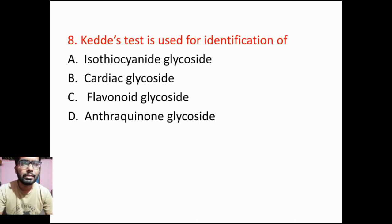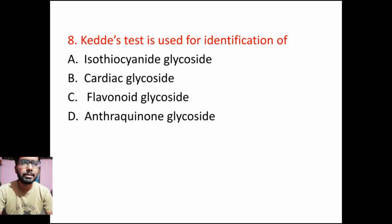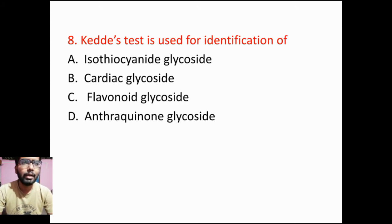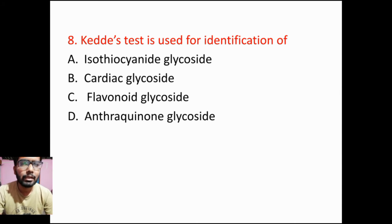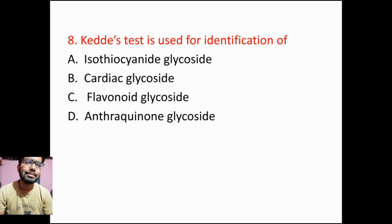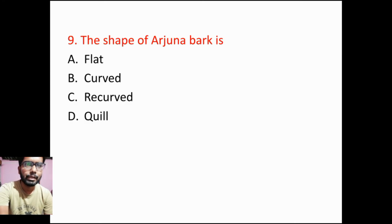Next question: which test is used for identification of — Option A: isothiocyanate glycoside, Option B: cyanogenic glycoside, Option C: flavonoid glycoside, Option D: anthraquinone glycoside. The Kilishi test is always used to detect cyanogenic glycosides.